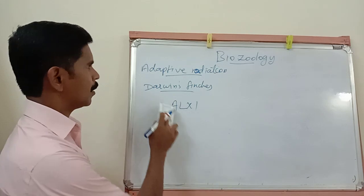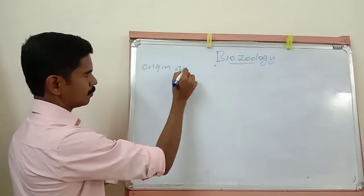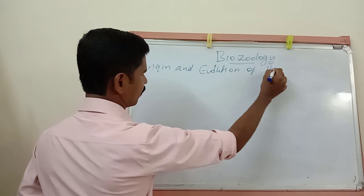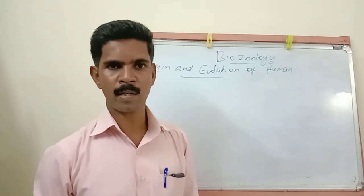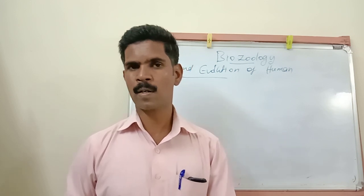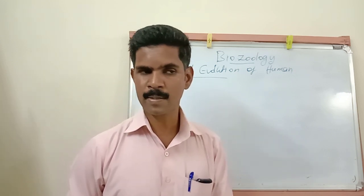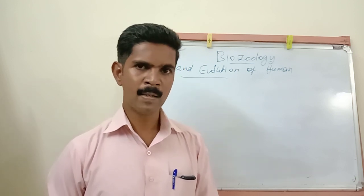Now we are going to study about one more topic: the origin and evolution of human beings. Human beings evolved in the world during the Jurassic period — that means before 210 million years ago. Our first ancestors were lived in Asia and Africa.